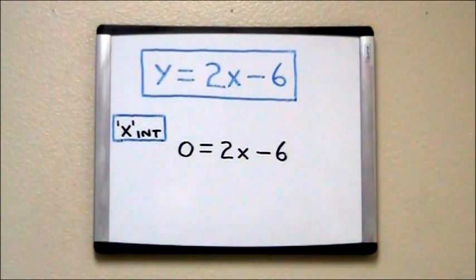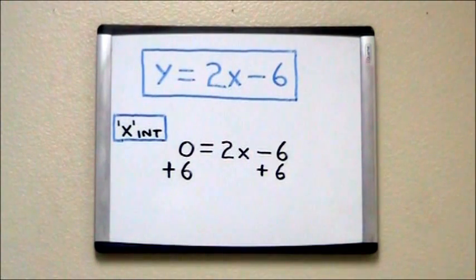Our goal is to isolate the x, so the first thing we're going to do is add 6 to each side of the equation. When we do this, the 6's on the right side of the equation cancel each other out. We add 6 to 0 on the left side of the equation and get a simplified version.